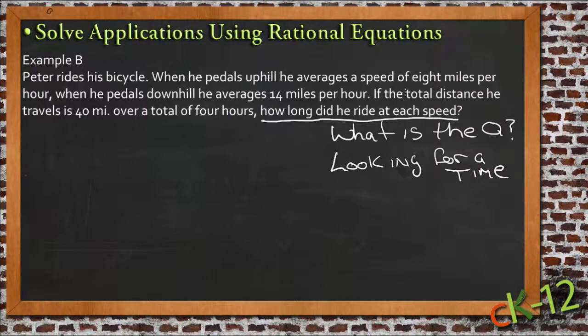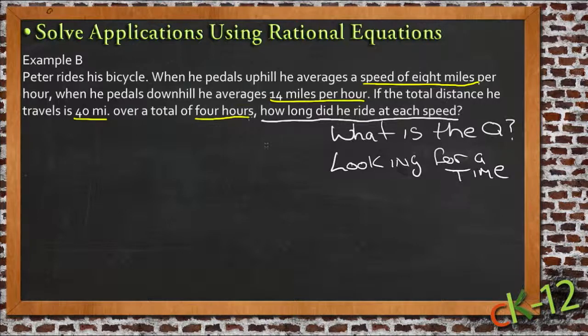The other information we have in the paragraph: a speed of 8 miles per hour, a speed of 14 miles per hour, a distance of 40 miles, and a time of 4 hours. So we're looking for a time, and we have another time, a distance, and a couple of rates.